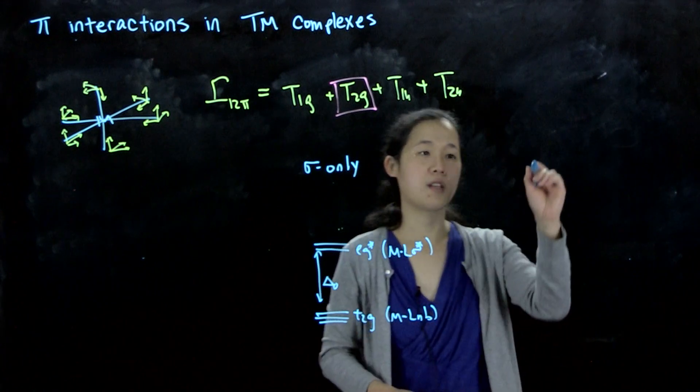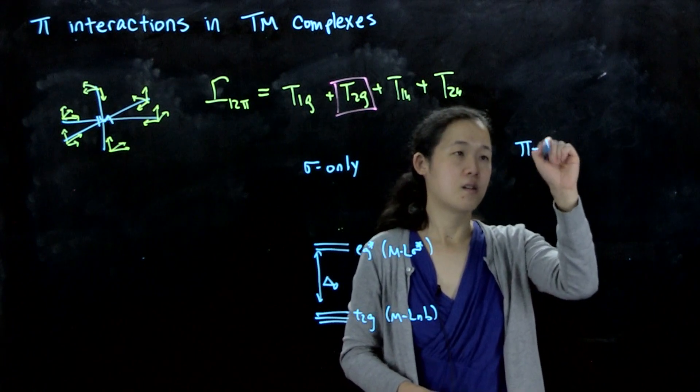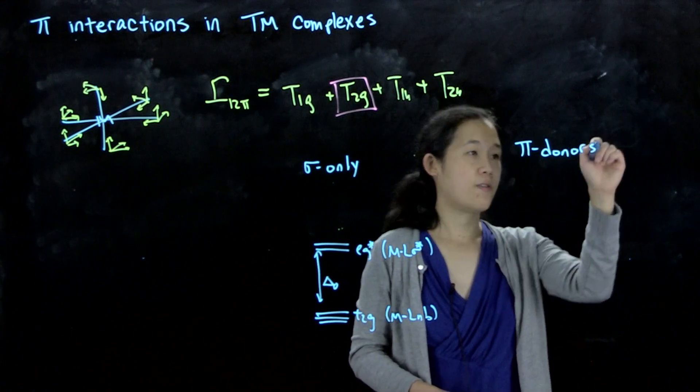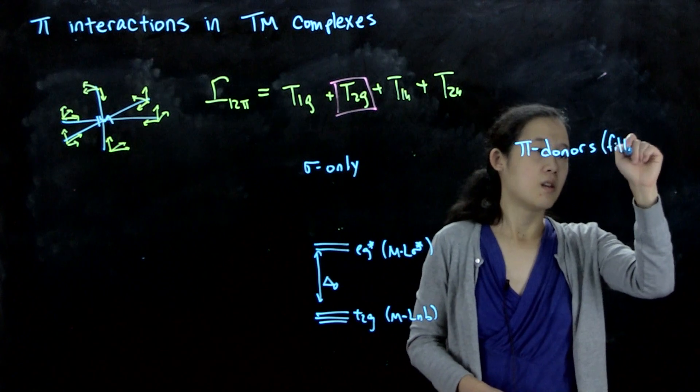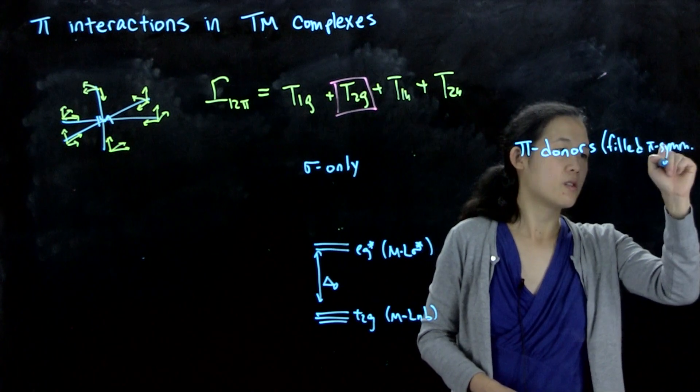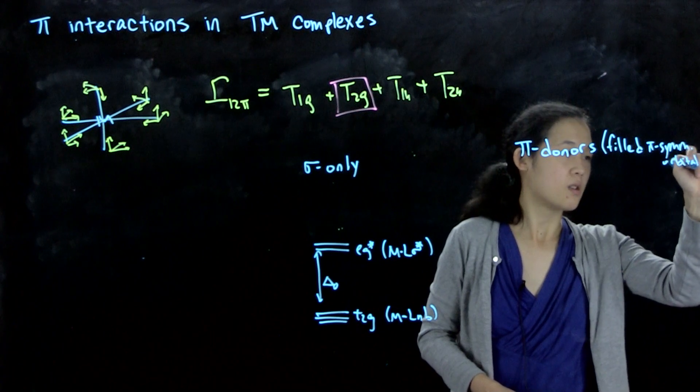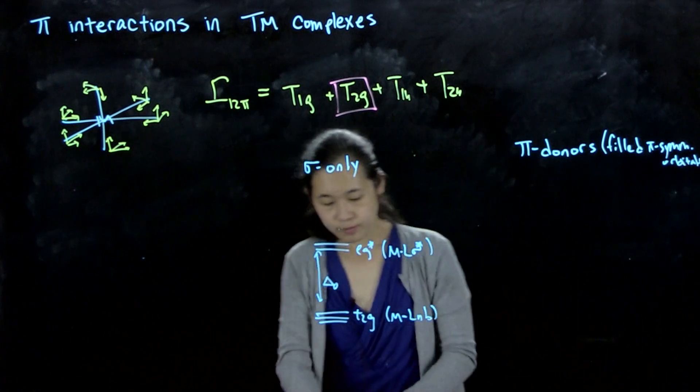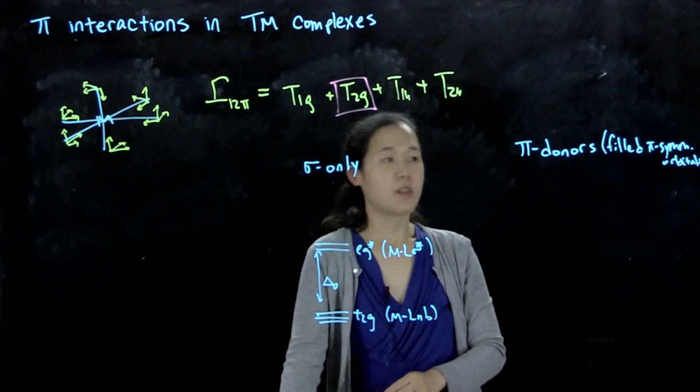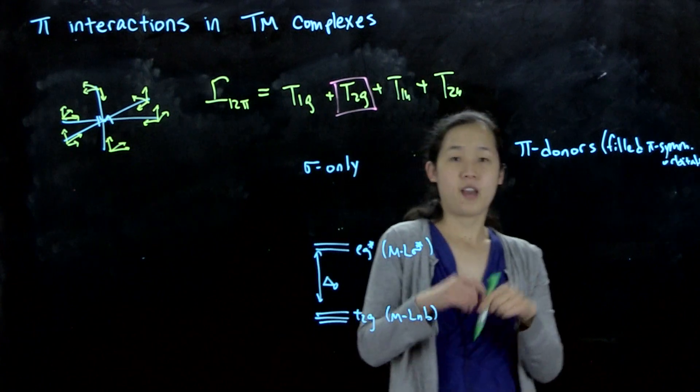Let's suppose that we're looking at pi-donors. The key point of pi-donors is that they're filled pi-symmetry orbitals.